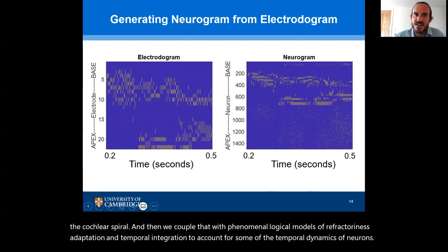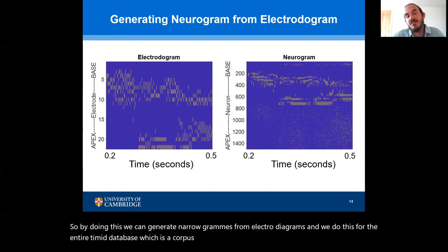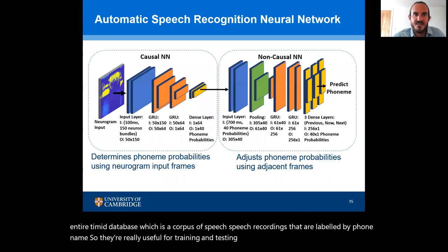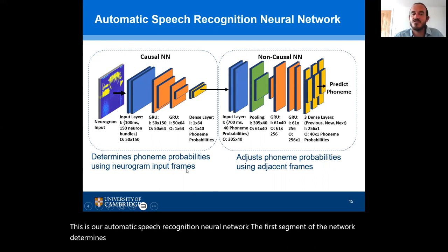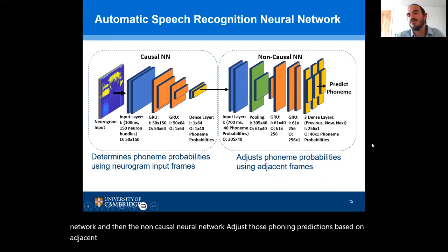By doing this, we can generate neurograms from electrodograms. We do this for the entire TIMIT database, which is a corpus of speech recordings labeled by phoneme — very useful for training and testing ASRs. This is our automatic speech recognition neural network. The first segment of the network determines phoneme probabilities using neurogram input frames via a causal neural network. The non-causal neural network then adjusts those phoneme predictions based on adjacent frames, which is our way of incorporating context cues into our ASR.